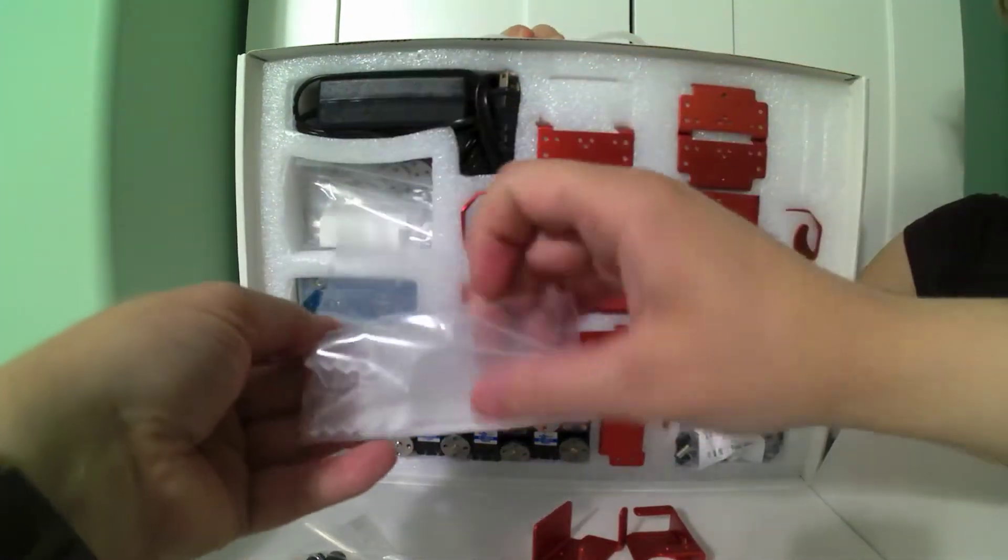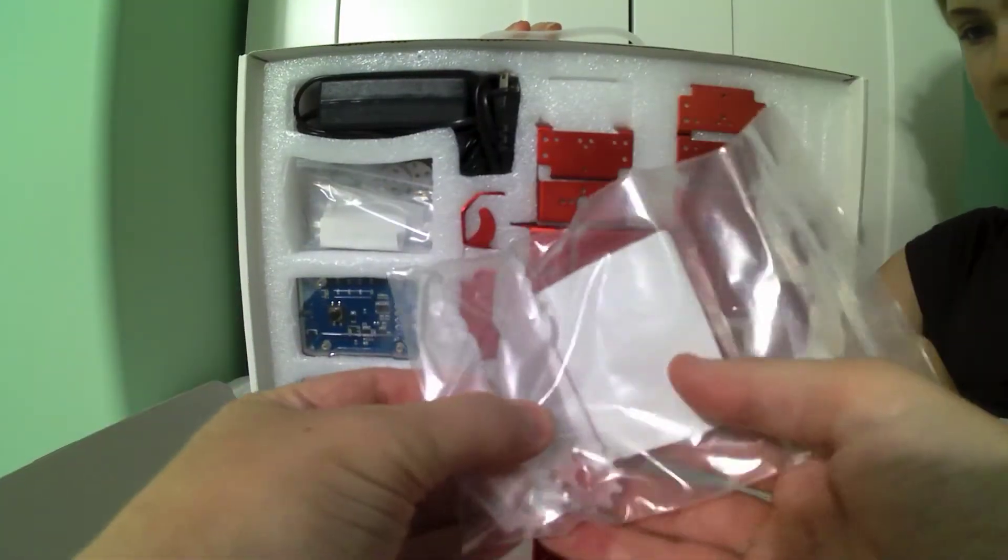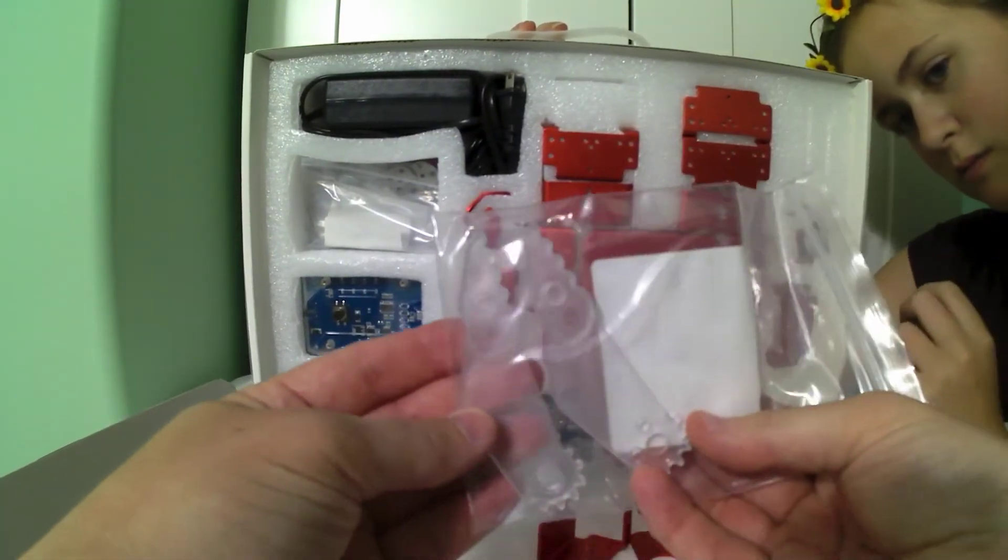Look under the phone stand. So here, these are the arms or the claws for when it's the industrial robot.